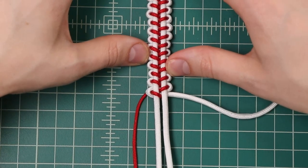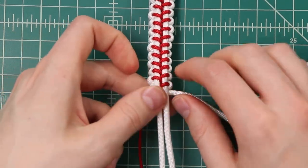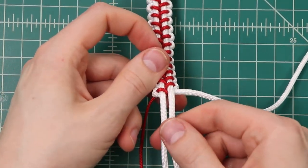So there's as much weave as we need and we're just going to end our two cords here and add a toggle knot to the end.